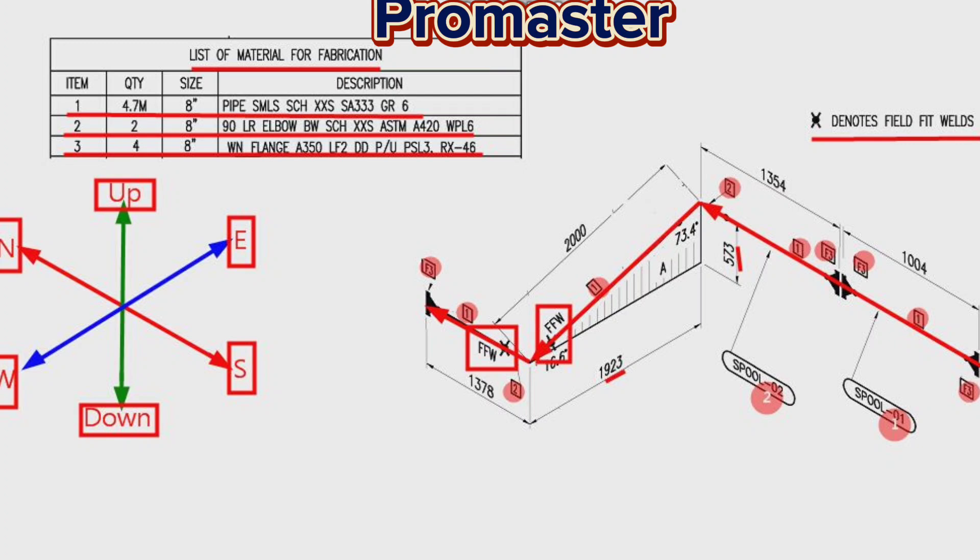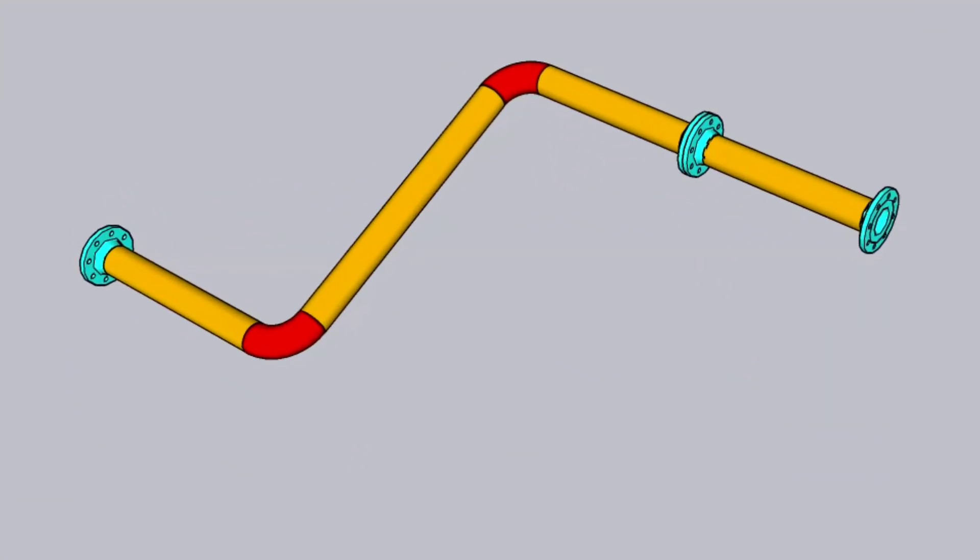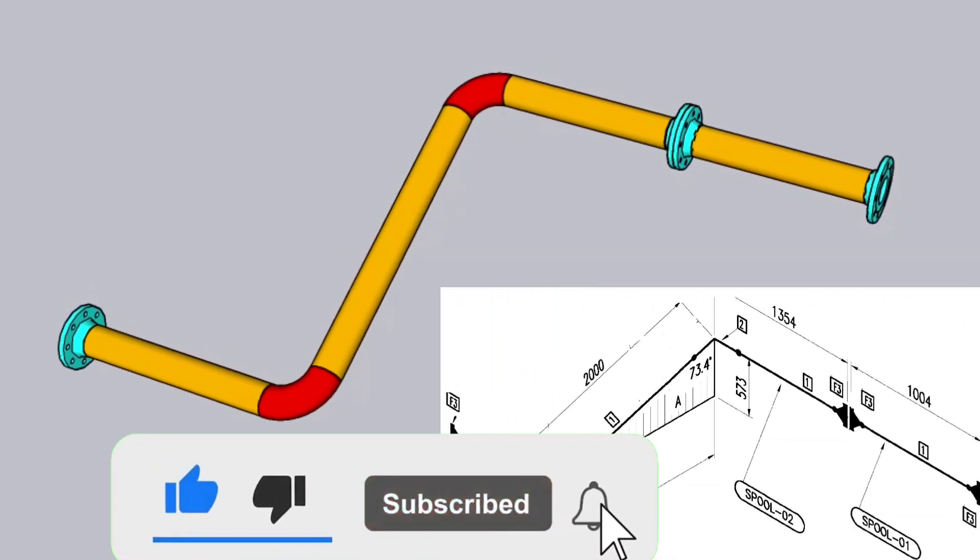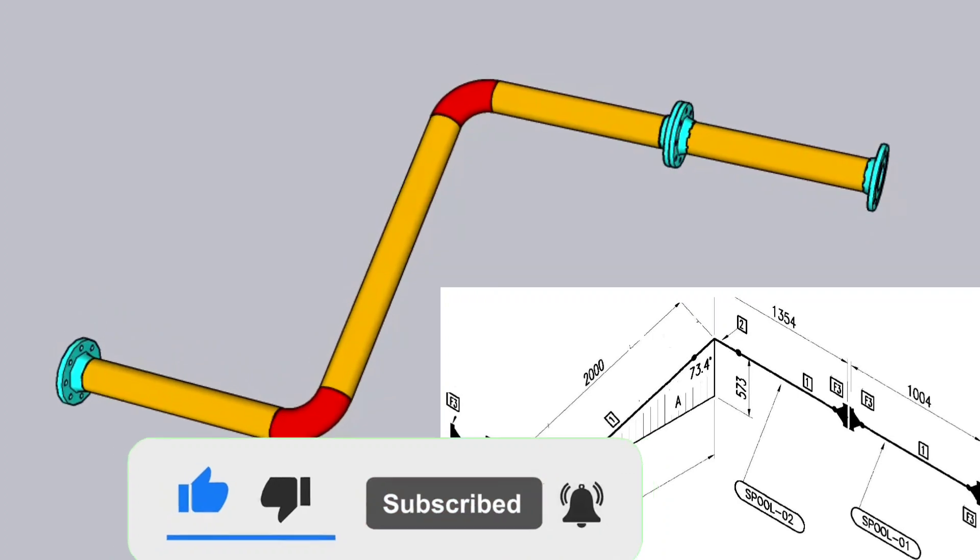So the correct reading of the pipe drawing is completed. Let's look at the 3D model view of this pipeline. The 3D view of the pipeline helps us understand pipeline isometry more easily.